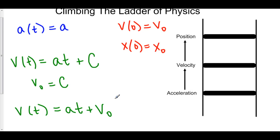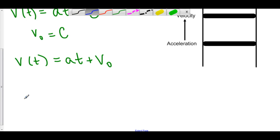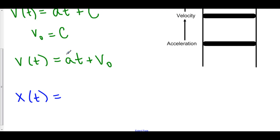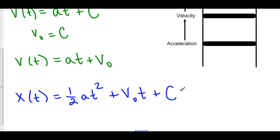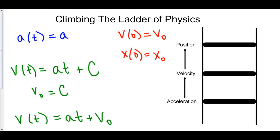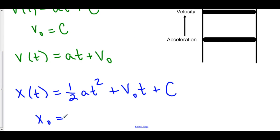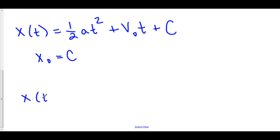Now let's go up to position. The antiderivative of velocity gives us position. The antiderivative of at with respect to t is one-half at squared. The antiderivative of v-naught is v-naught·t, and we have to include the plus C. Our initial position is x-naught, so let's plug x-naught into x and zero into t. One-half times a times zero is zero, v-naught times zero is zero, and so C is equal to x-naught.